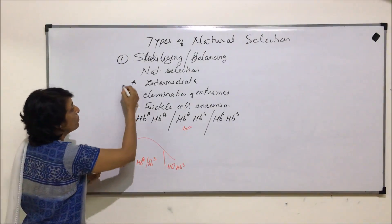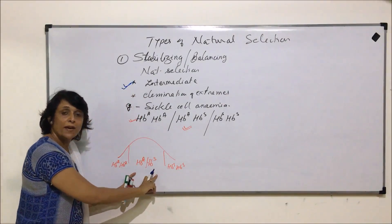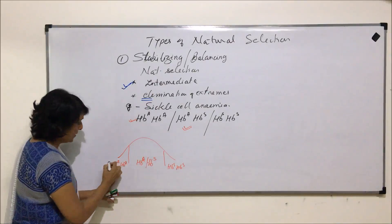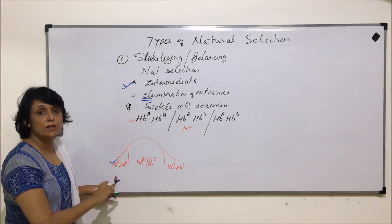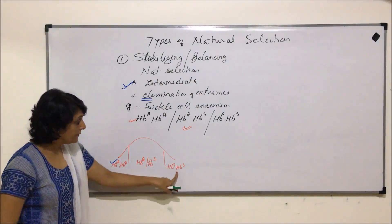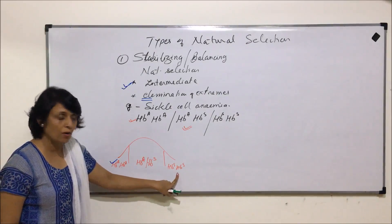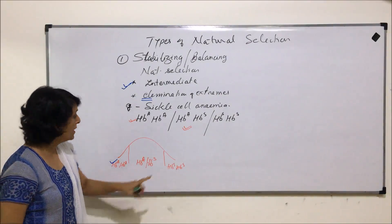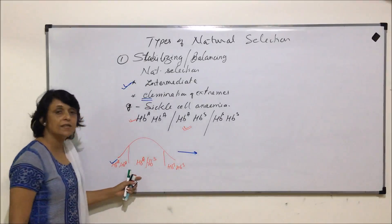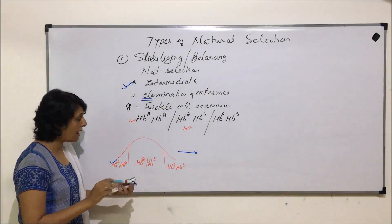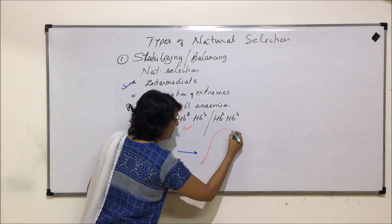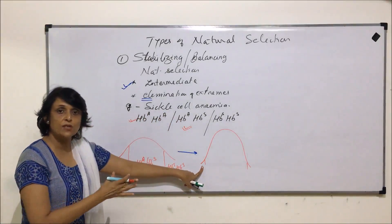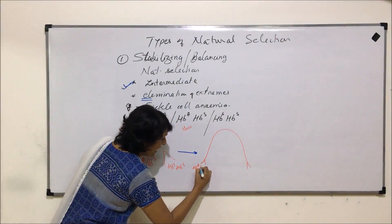Natural selection picks more and more of the intermediate heterozygous condition and eliminates both extremes. The extreme HbA HbA gets eliminated because individuals are infected by the malarial parasite, and HbS HbS gets eliminated because those individuals have the most severe disease. Over time, the graph changes and the number of individuals at the extremes becomes very low.